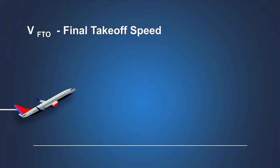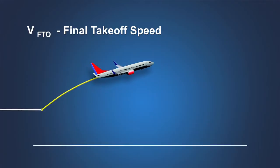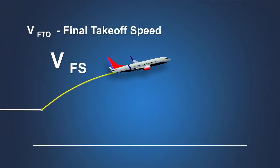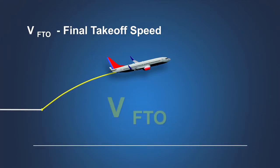Over the years, the airspeed flown during the final segment has been referred to by a number of different terms. You may be familiar with VFS, VENR, or VSSE. In 2002, FAA incorporated the term VFTO — or final takeoff speed — into the certification rules to identify the airspeed to be flown in the final segment. This speed provides an adequate margin above the stall speed in the clean configuration.